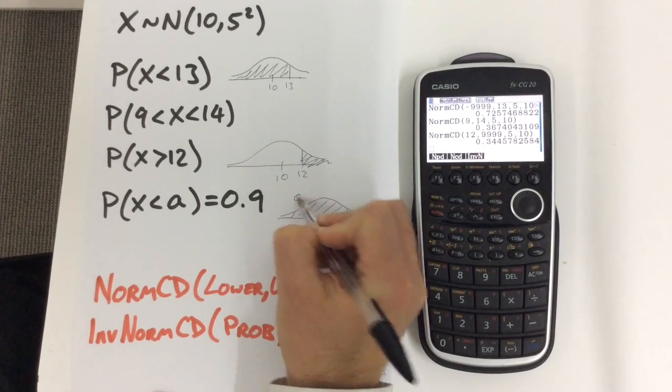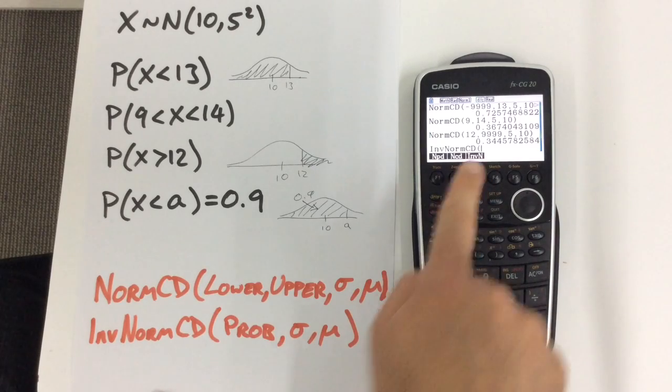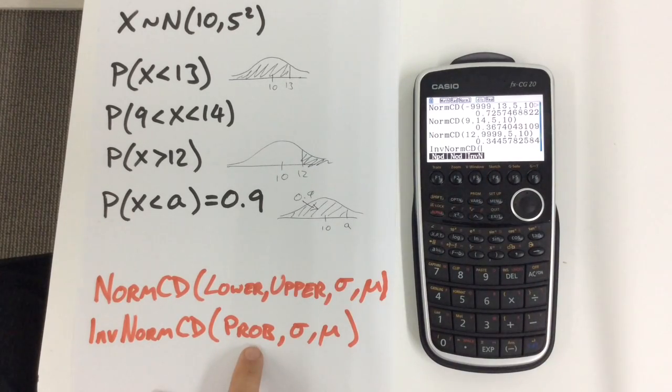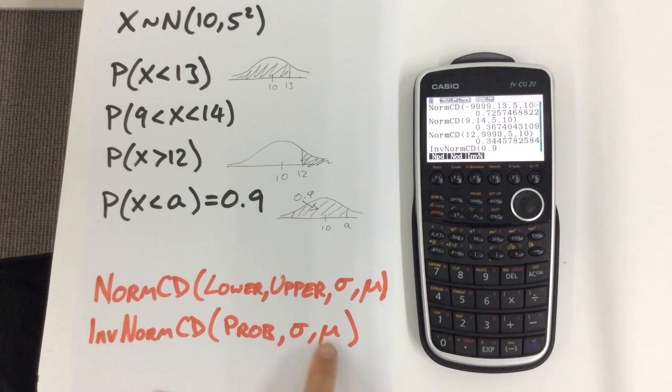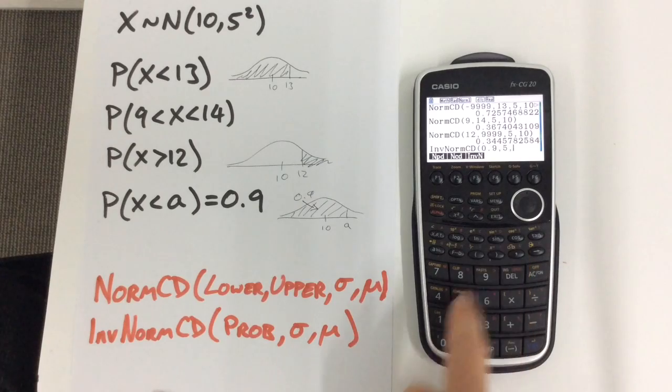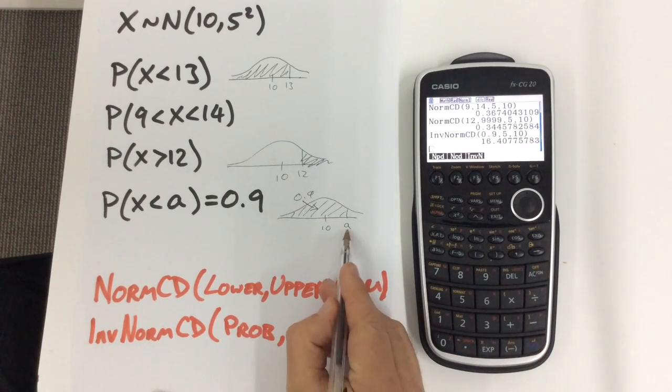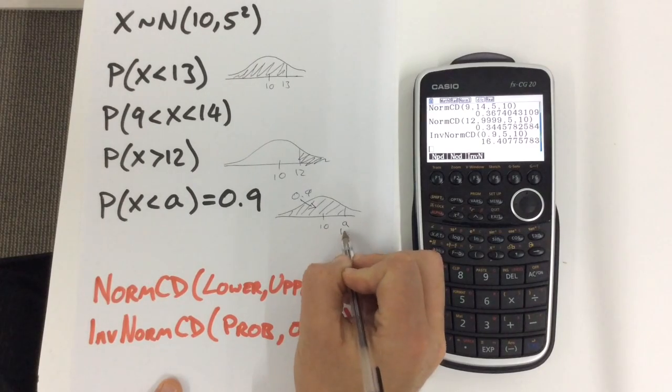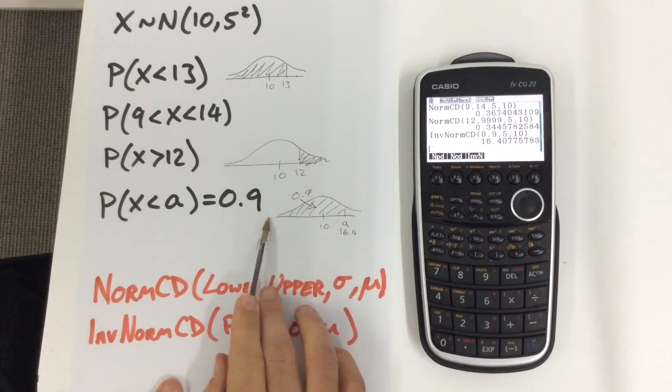And the way that we enter that is by pressing the Inverse Norm CD, so Inverse Norm. The probability we're interested in here is 0.9, and again we're putting these two values in: 5 and 10.